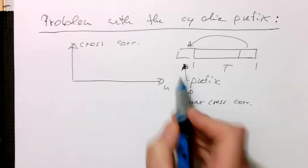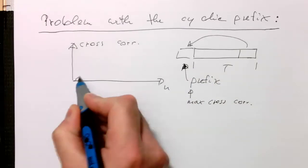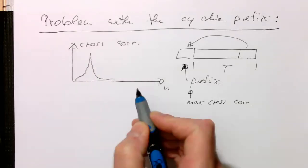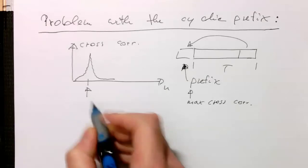If we're doing a sliding cross-correlation over this, then this looks probably like this. Then it goes down again, and here at this point, this should be the start of the symbol.